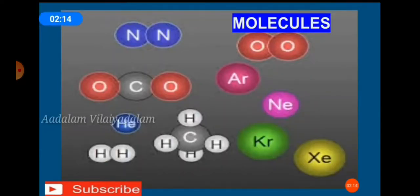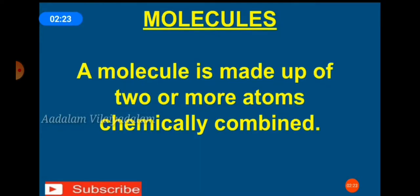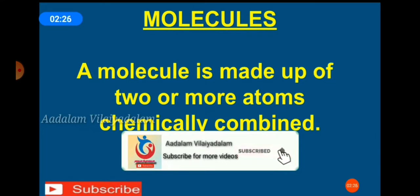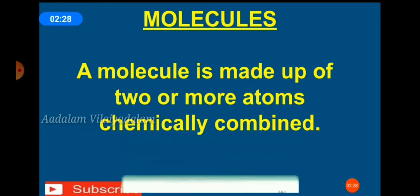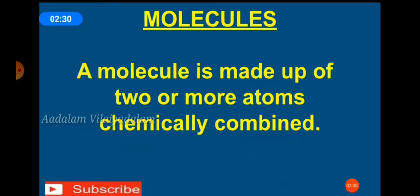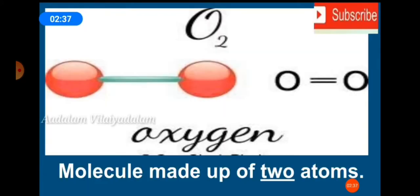Molecules: a molecule is a group of atoms bonded together that can take part in a chemical reaction. A molecule exists when two or more atoms join together by forming chemical bonds. So a molecule is made up of two or more atoms chemically combined. Now let us see some of the atoms that chemically combine to form a molecule.